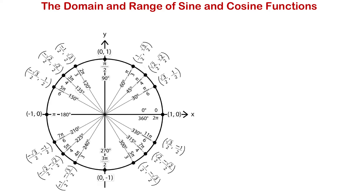In this video we will talk about the domain and range of sine and cosine functions. The domain of a function is the set of all possible inputs for this function — these are all the values that go into a function. The range is the set of all outputs of a function.